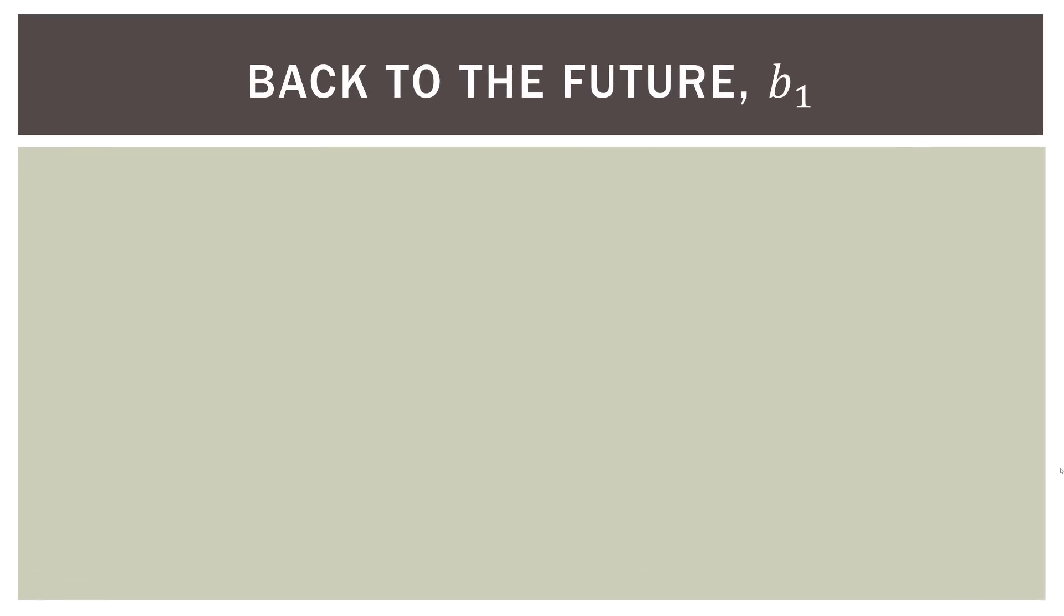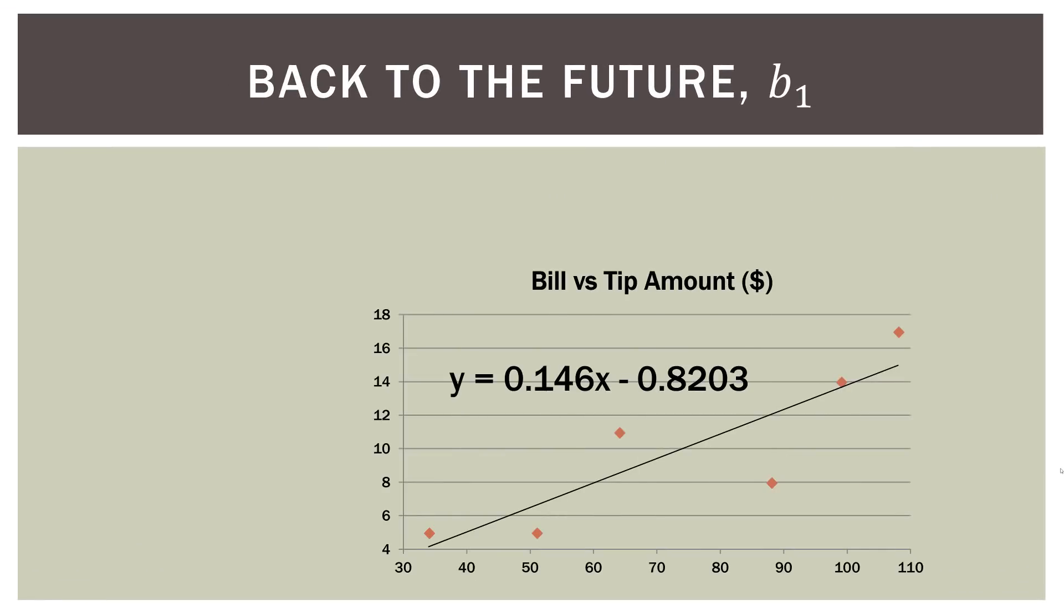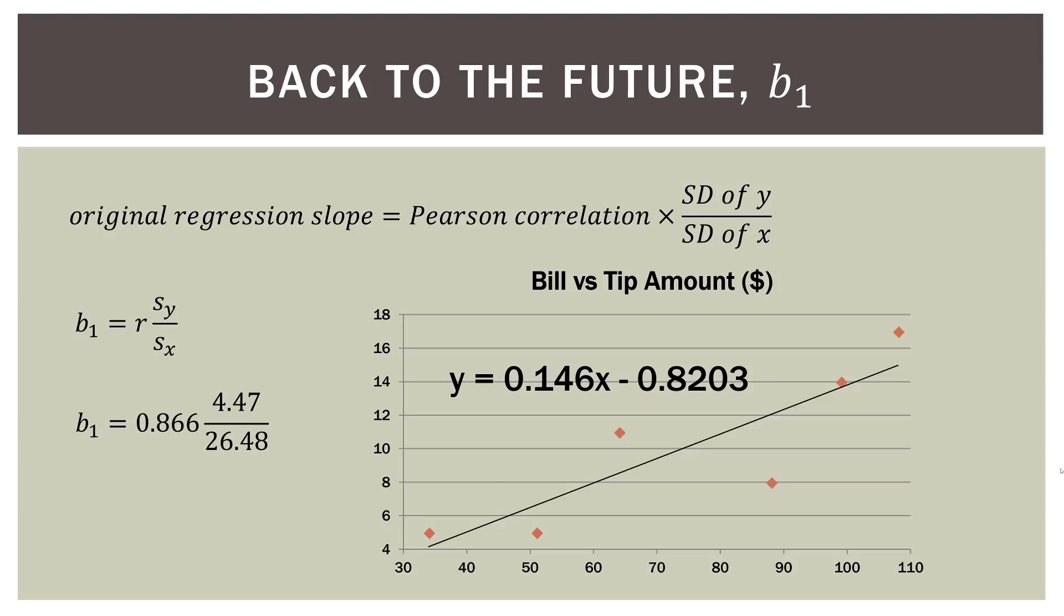So back to the future, b1, the slope. Here is our graph and regression equation we did at the beginning. So this is the way this all relates. The original regression slope, in this case 0.146, is equal to the correlation times the ratio of standard deviations—y deviation over standard deviation of x. And actually, we'll go ahead and prove that. So here's the equation. The slope is equal to the correlation multiplied by deviation of y divided by the standard deviation of x.